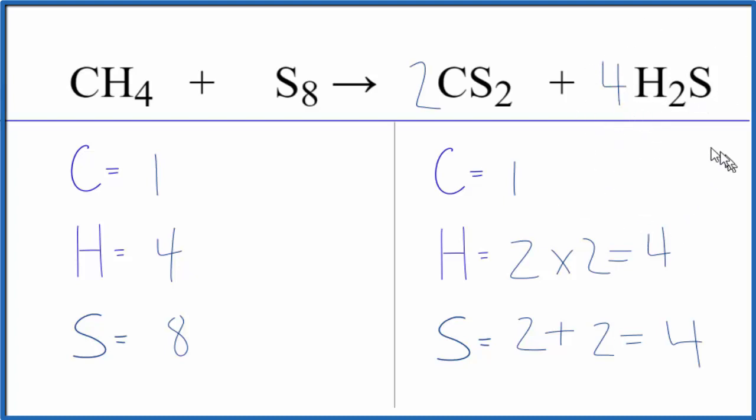Now we need to update everything because all of it's changed. We have one times two, two carbons. Hydrogens, two times four, eight of those. Sulfur, two times two is four, plus four times the one here is four. So we have balanced the sulfur atoms. Now the carbons and the hydrogens are off.